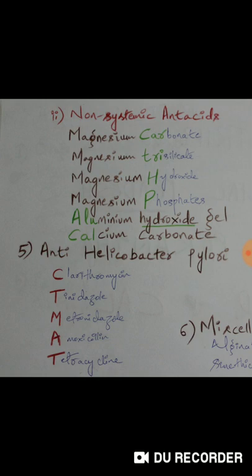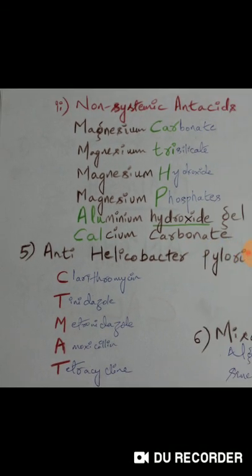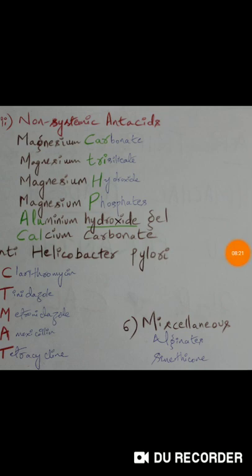Number five is anti-Helicobacter pylori drugs — Helicobacter pylori is the most common bacterium causing risk factors for gastric malignancies. The mnemonic is 'city matte' (CT matte), written in red. This stands for clarithromycin, tinidazole, metronidazole, amoxicillin, and tetracycline. Amoxicillin is the most commonly used drug. Miscellaneous agents include alginates and simethicone.